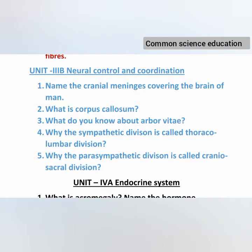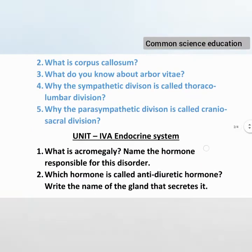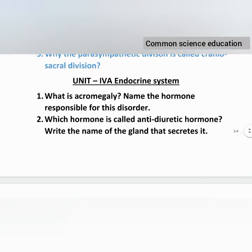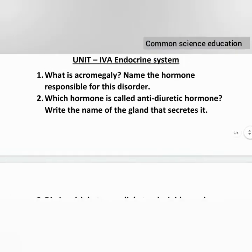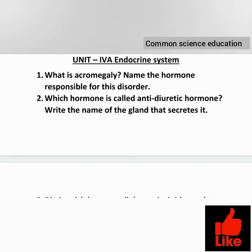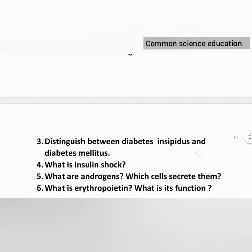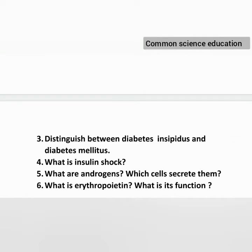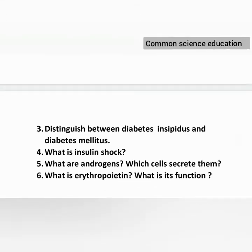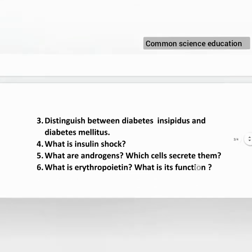Unit 4A: Endocrine System and Immune System. What is acromegaly? Name the hormones responsible for the disorder. Which hormone is called antidiuretic hormone? Write the name of the gland that secretes it. Distinguish between diabetes insipidus and diabetes mellitus. What is insulin shock? What are androgens and which cells secrete them? What is erythropoietin and what is its function?